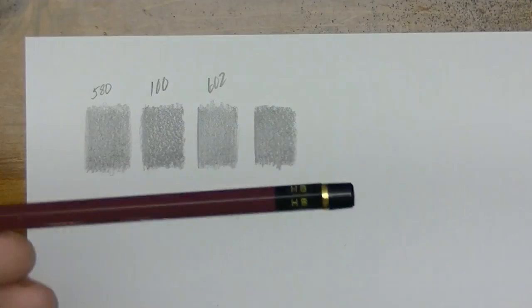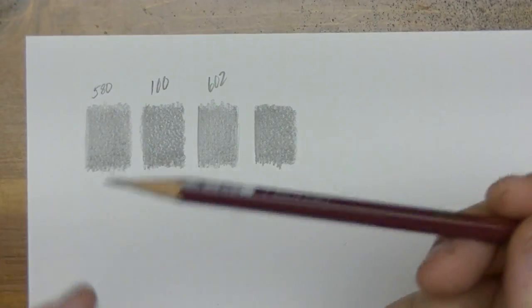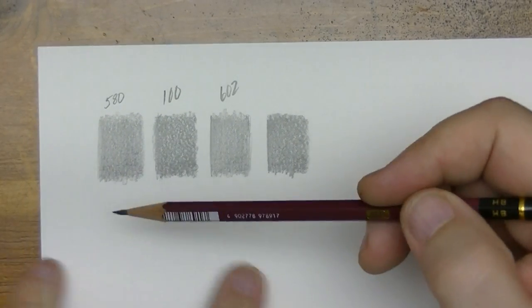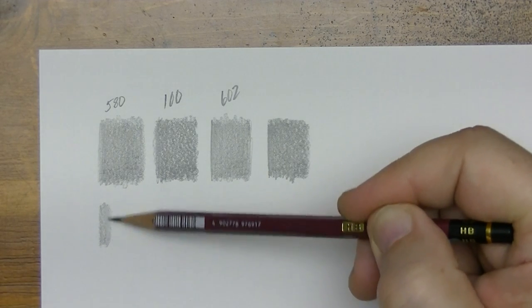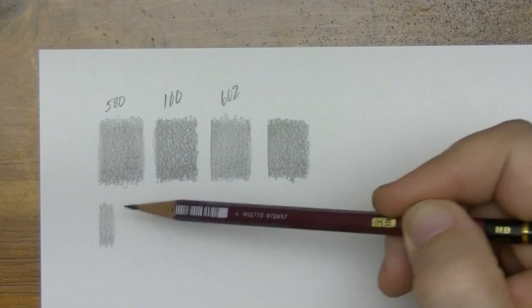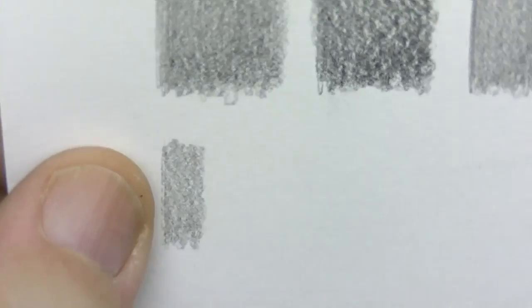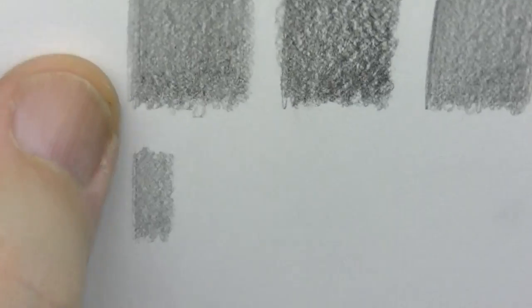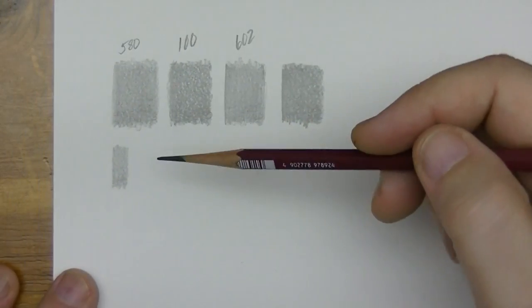So of course we're going to start with an HB pencil. Here's an HB pencil which is also would be known like a number two pencil and let's see if it falls within that spectrum right there. So this would be an HB pencil. Okay and I can see already that the HB is lighter than the 580.